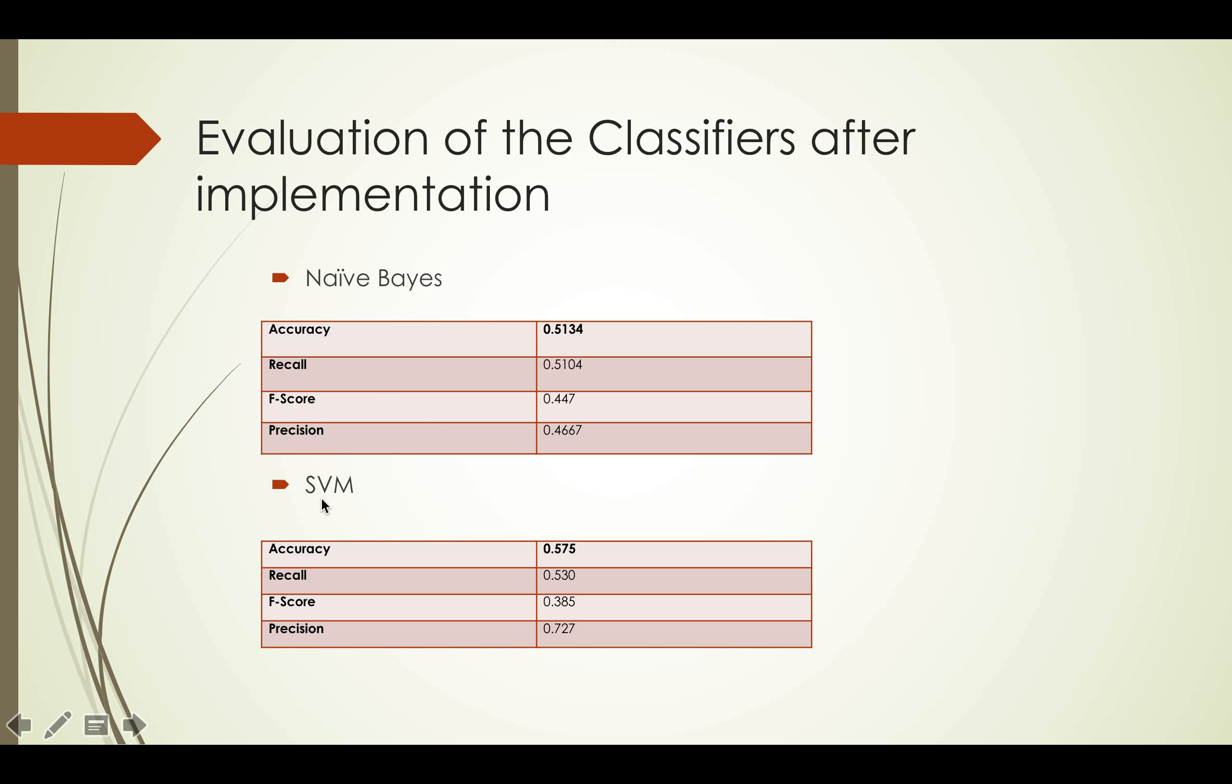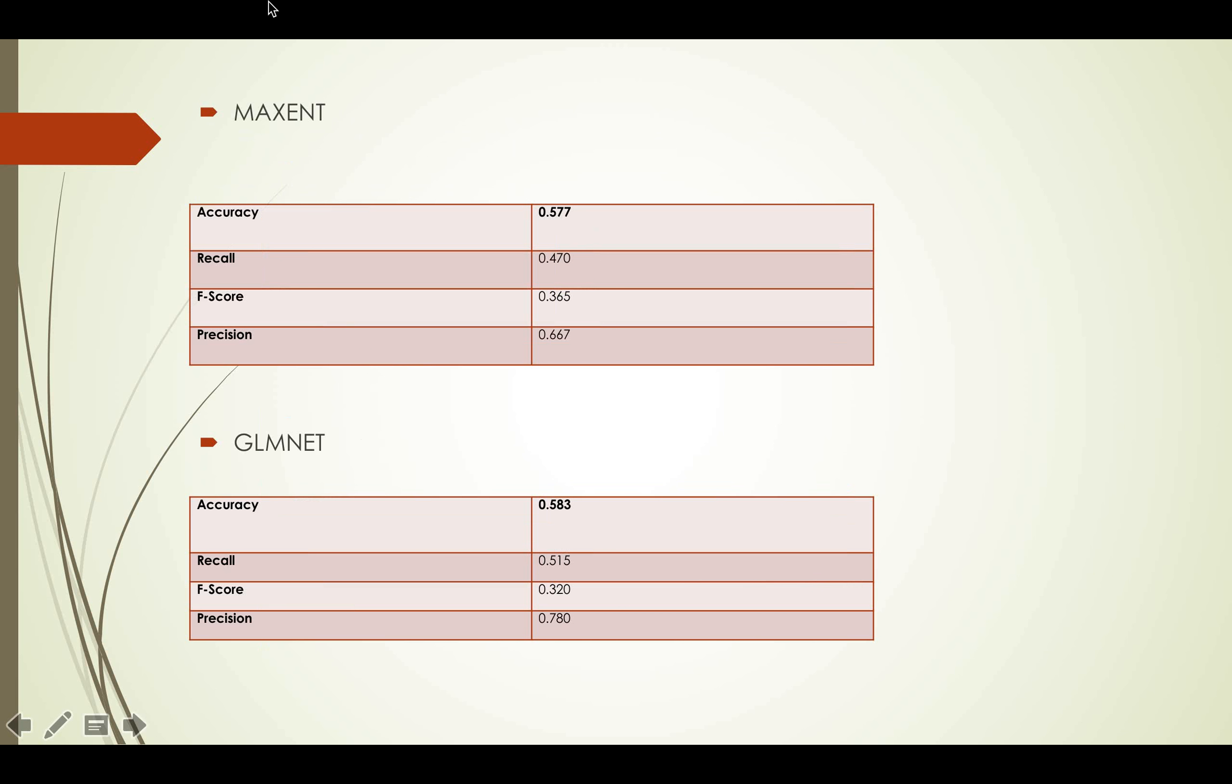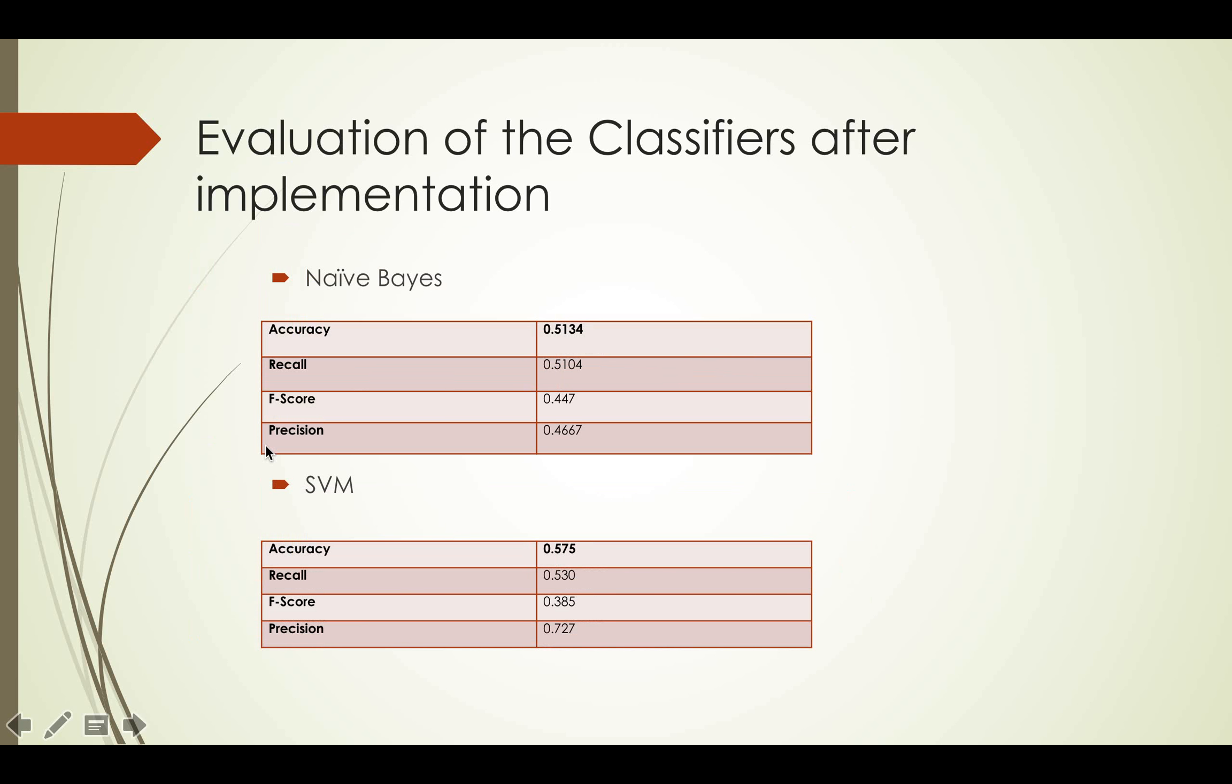I observed that while the precision for SVM, random forest, decision tree, and GLM net is high, its performance degrades when large data sets are concerned.